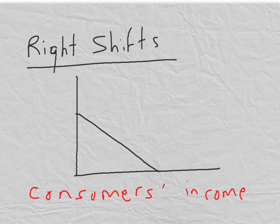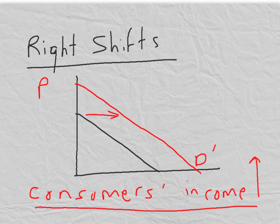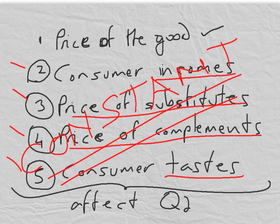So this was one of the factors we assumed was not changing. But let's assume it now does change — let's assume that consumers' incomes now do go up. This means that at any price, people will want to buy more of the product than they did before. So the demand curve will actually shift to the right as a result of the increase in consumer incomes. A shift in the demand curve is caused when any one of these four factors that we assumed to be constant when we drew our original demand curve changes.